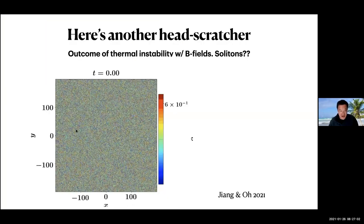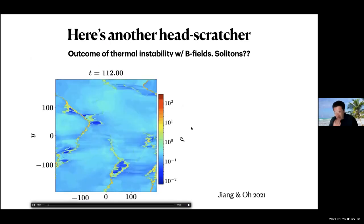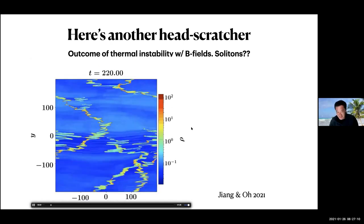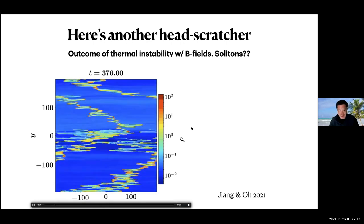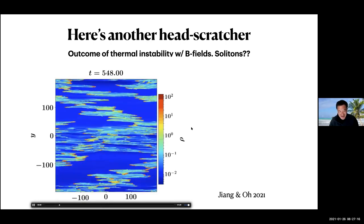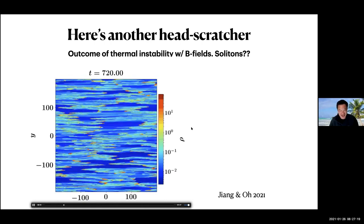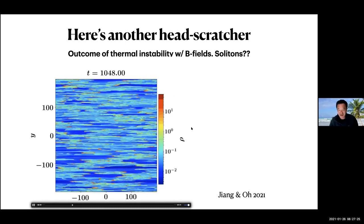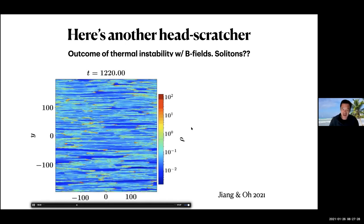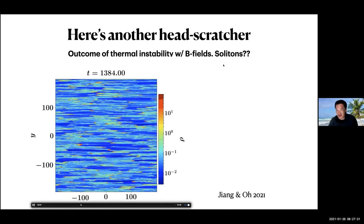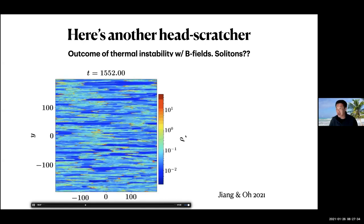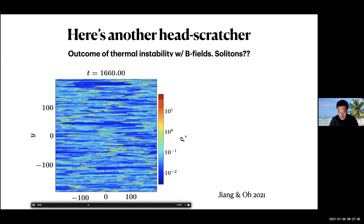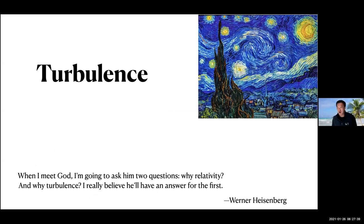Here's another head-scratcher: this is a simulation of thermal instability by Yanfei Jiang, who was on Thursday's panel. Look at these 'tadpoles' racing away — we think it has something to do with solitons. If any of you have ideas, I'd be interested. I've got about 15 minutes per component, so let's move on to turbulence.